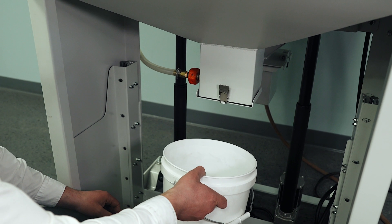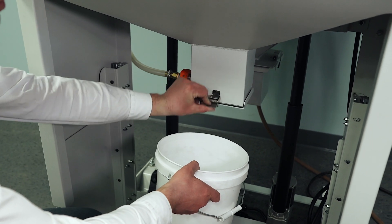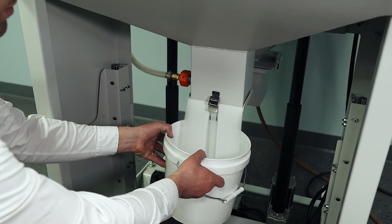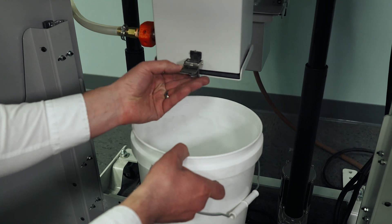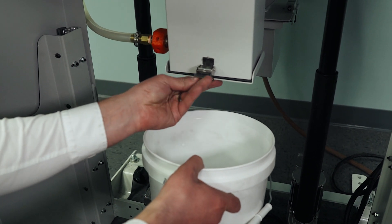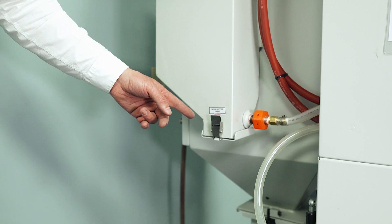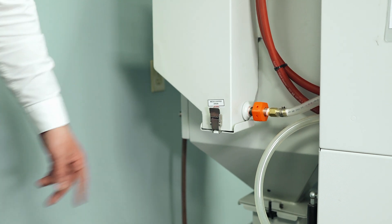In order to drain the media out of the machine, open the tab at the bottom of the machine. The single use media hopper can be drained in the same way.